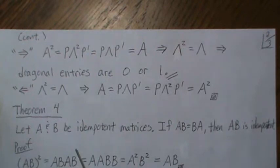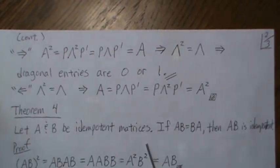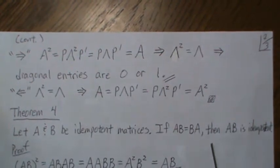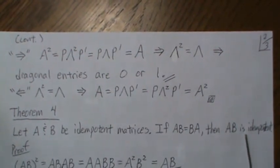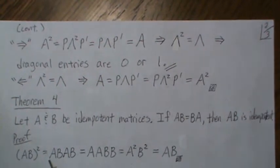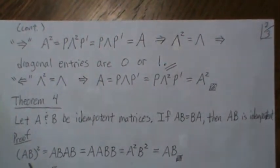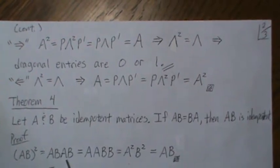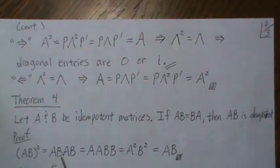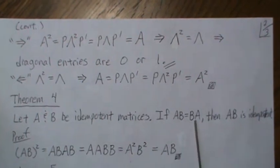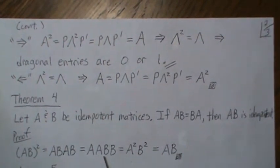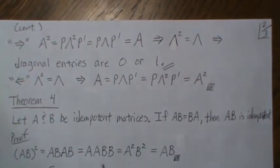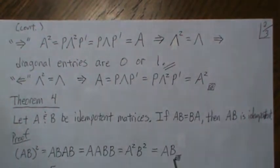Theorem four: let A and B be idempotent matrices. If AB equals BA, then AB is idempotent. To prove this, AB squared equals AB times AB. But since BA equals AB, we can substitute to get A squared B squared. Since A and B are idempotent, that's AB. So AB is idempotent.